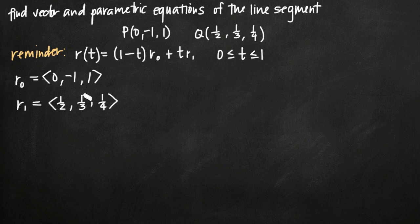So now we have two vectors r₀ and r₁. We just need to plug them into our formula for r(t). All we're going to do there is say r(t) is equal to (1-t)r₀ + tr₁. Here's where we plug in our vector r₀ <0,-1,1>, plus we multiply r₁ by t, so we have this t out in front, and we multiply it by the vector r₁: <1/2, 1/3, 1/4>.